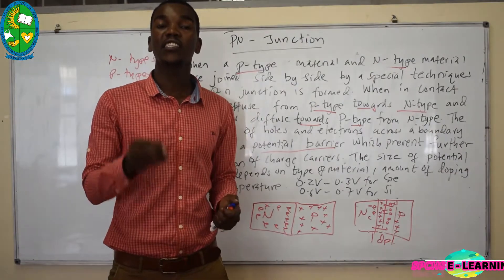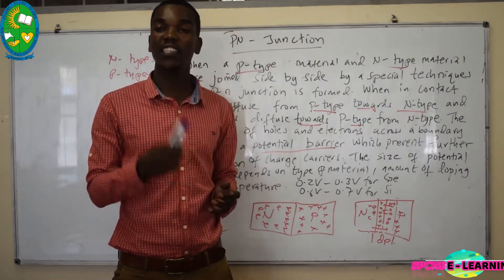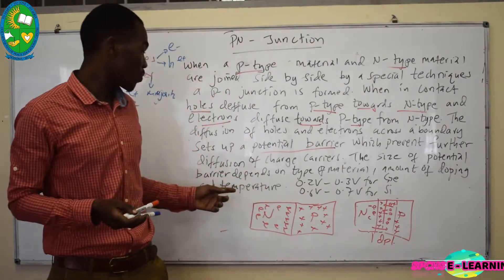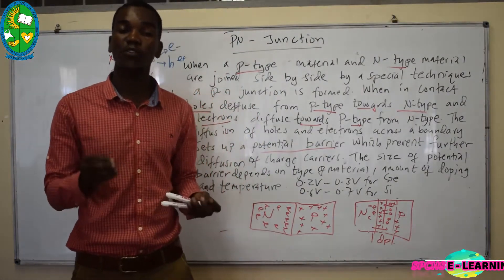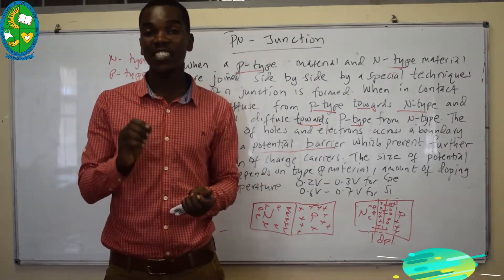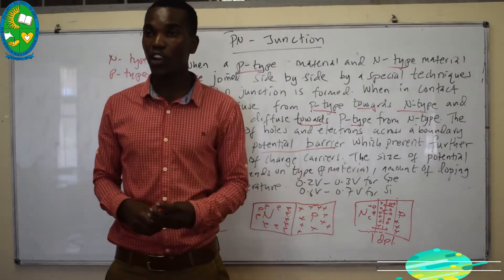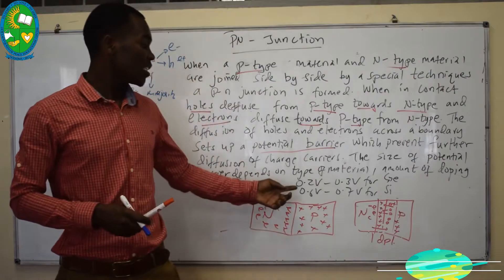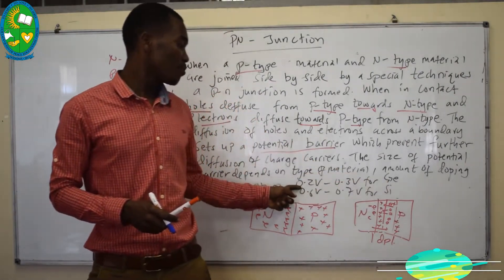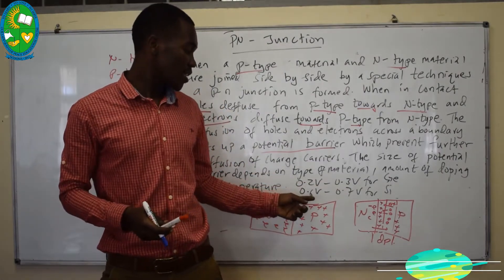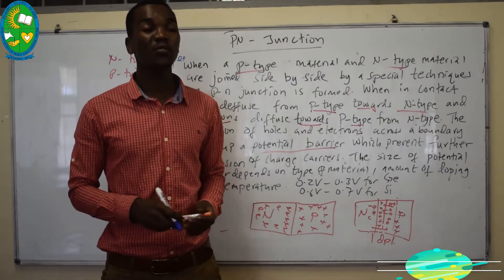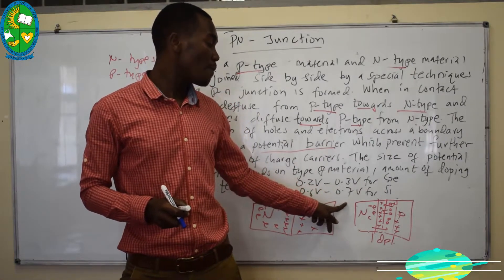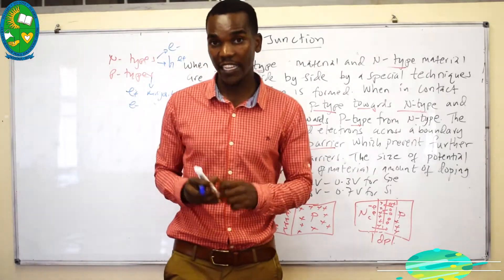If the doping process is very large — that is, the added impurities are very large — the potential barrier will be small. Whereas if the added impurities are quite small, the potential barrier will be large. It also depends on temperature; increasing the temperature decreases the resistance of the material. The potential barrier for germanium lies between 0.2V to 0.3V, and for silicon it lies between 0.6V to 0.7V. So for conduction to occur, you need about 0.7V for silicon and 0.3V for germanium.